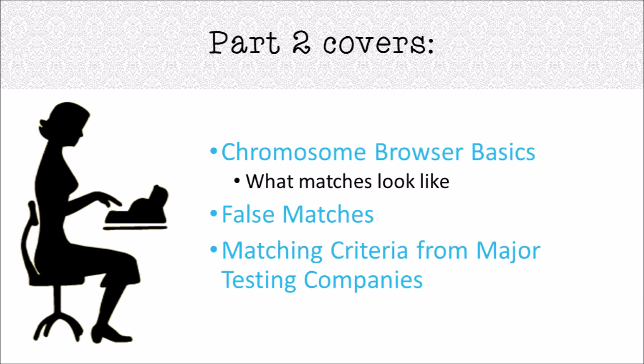In part two, we're going to be talking a little bit more about those same concepts, but as they apply to chromosome browsers. We're going to go into the basics of a chromosome browser, what it looks like and how it works. We're going to talk about false matches, identical by descent versus identical by state. We're also going to talk about the matching criteria from different major testing companies.